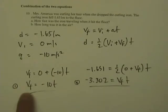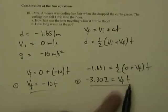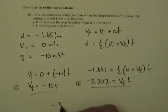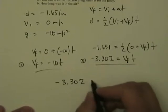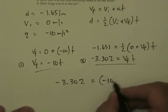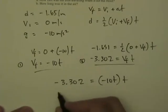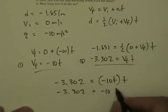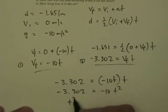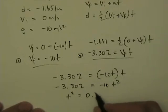Now you've got two equations and two unknowns. So let's see here. I'm going to take this VF and I'll plug it into there. So I'm going to be left with minus 3.302 equals minus 10 T T. So that's going to be minus 3.302 equals minus 10 T squared. That leaves T squared being 0.33.